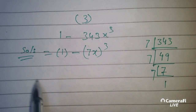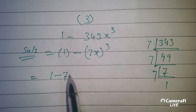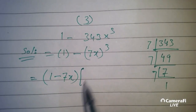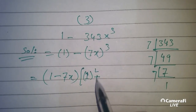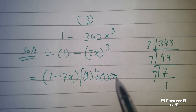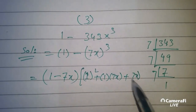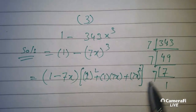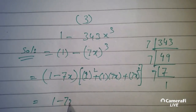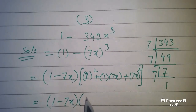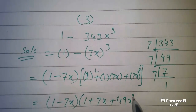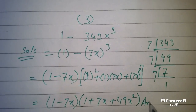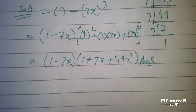7x cubed — cubic formula applied. First term squared, plus first term into second term, plus second term squared: 1 minus 7x, times 1 plus 7x plus 49x squared. Question b, our complete work. Next question.